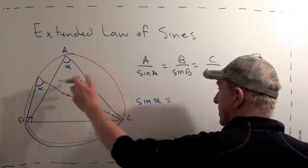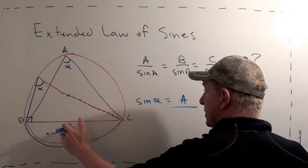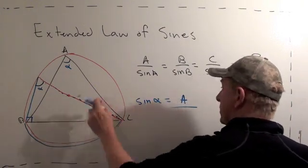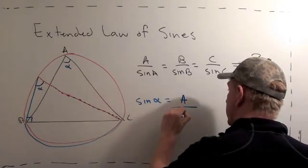Well, what's the opposite? It's side A over the diameter of the circumscribed circle of the original triangle, 2R.